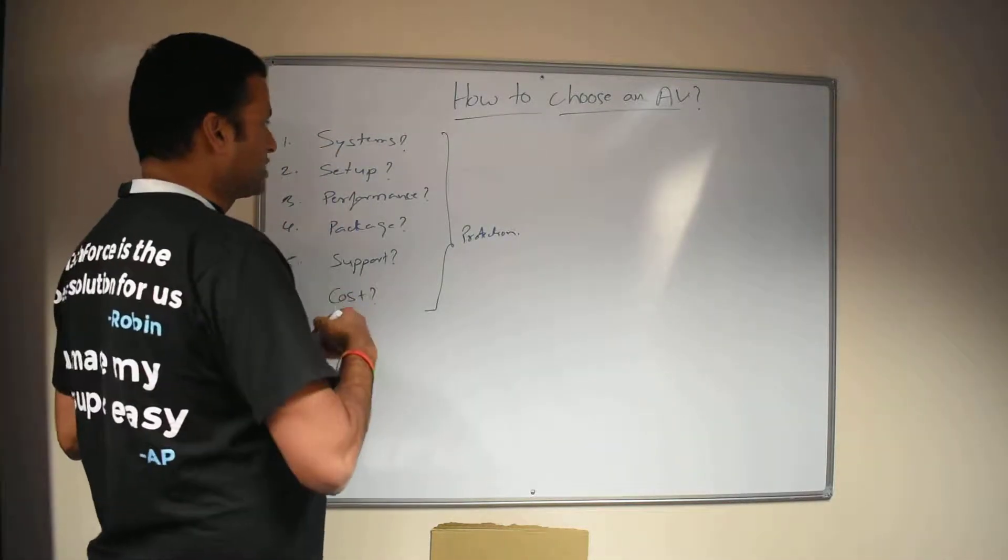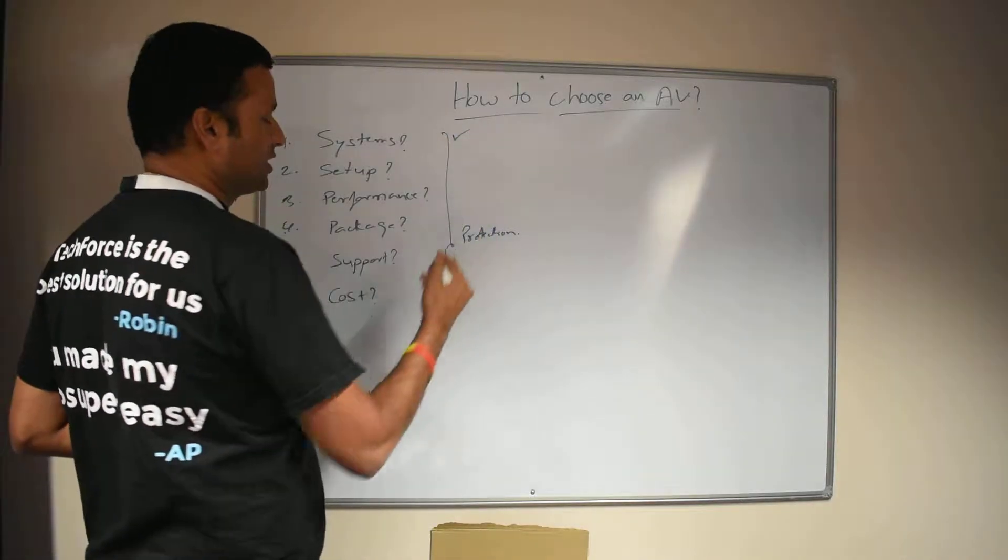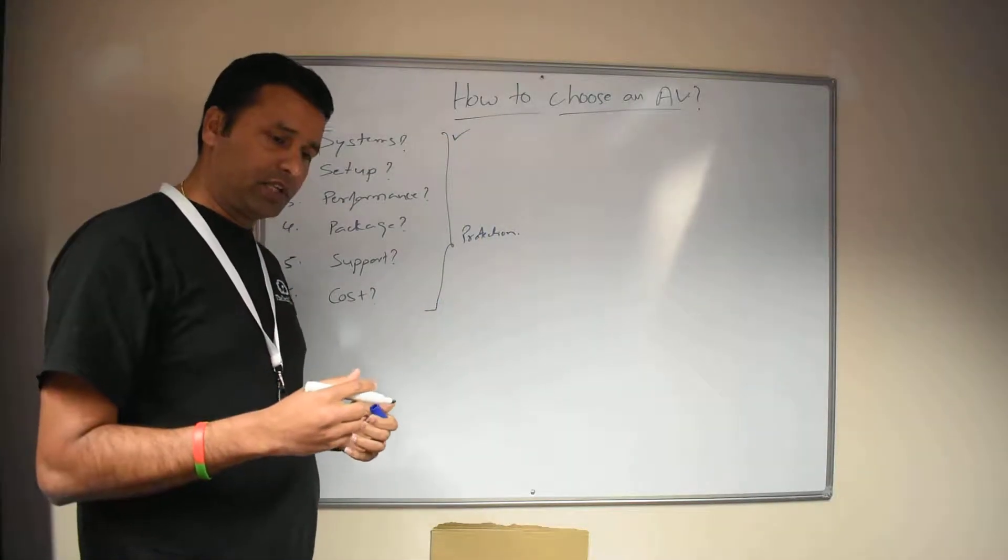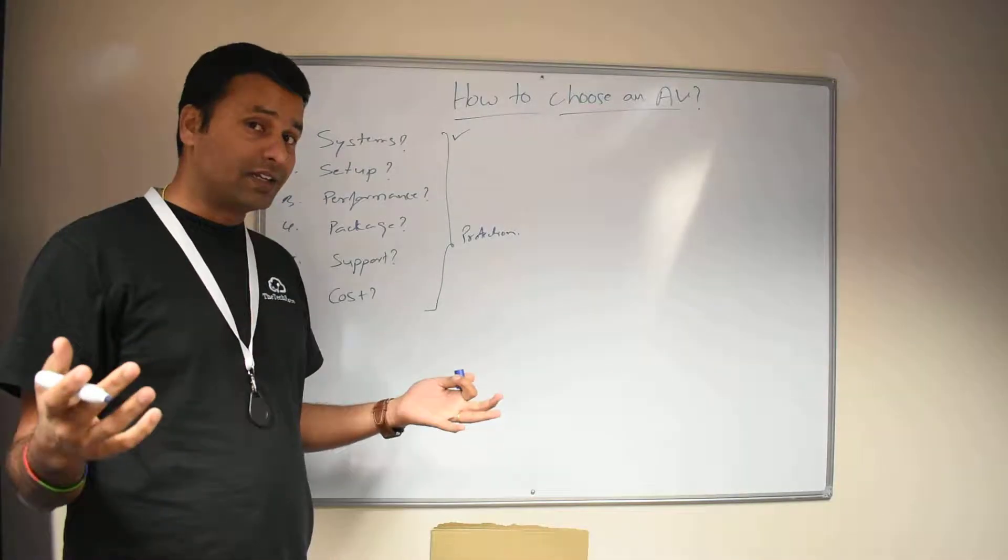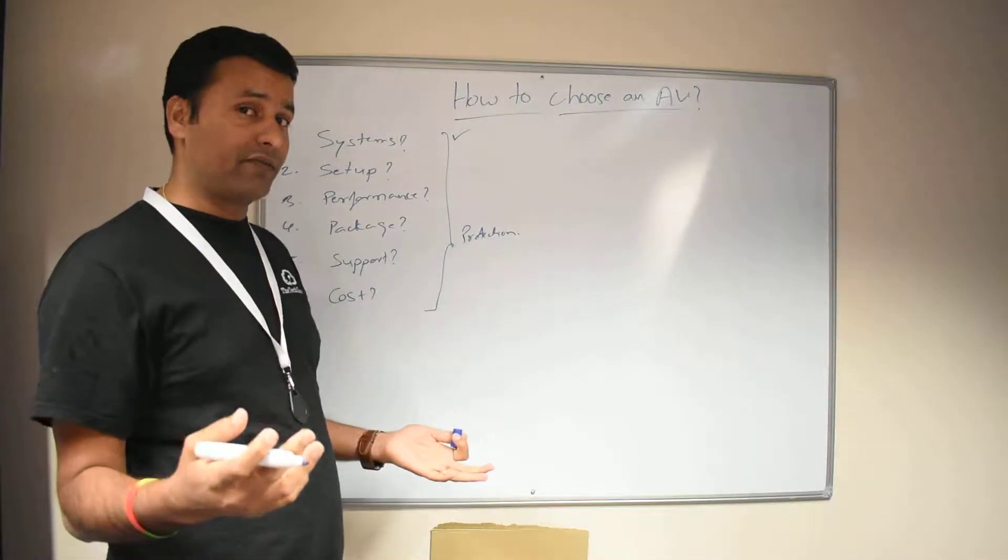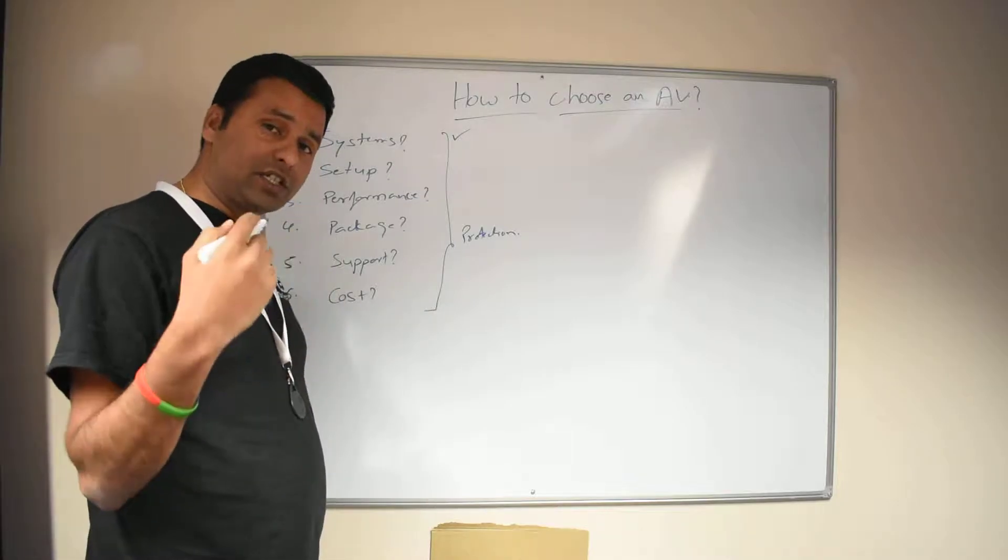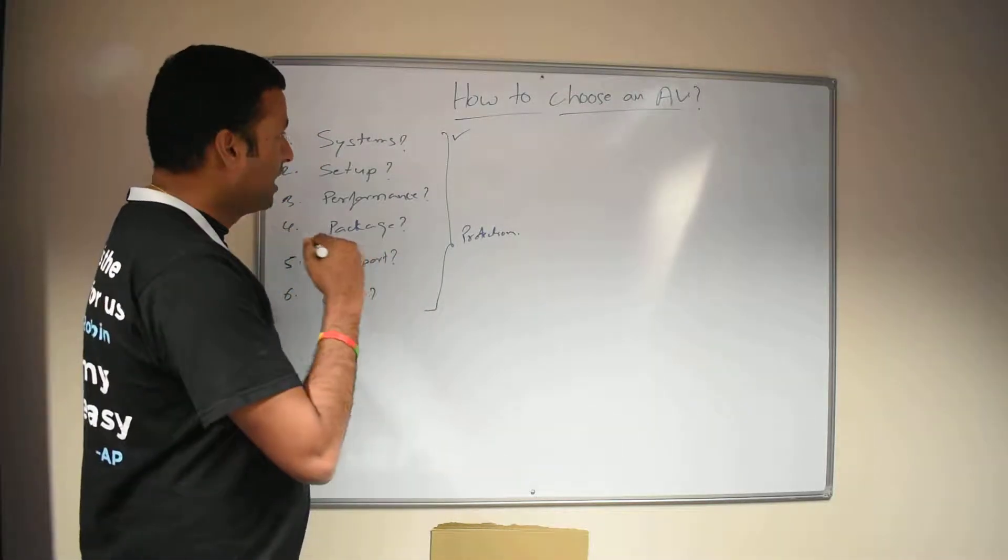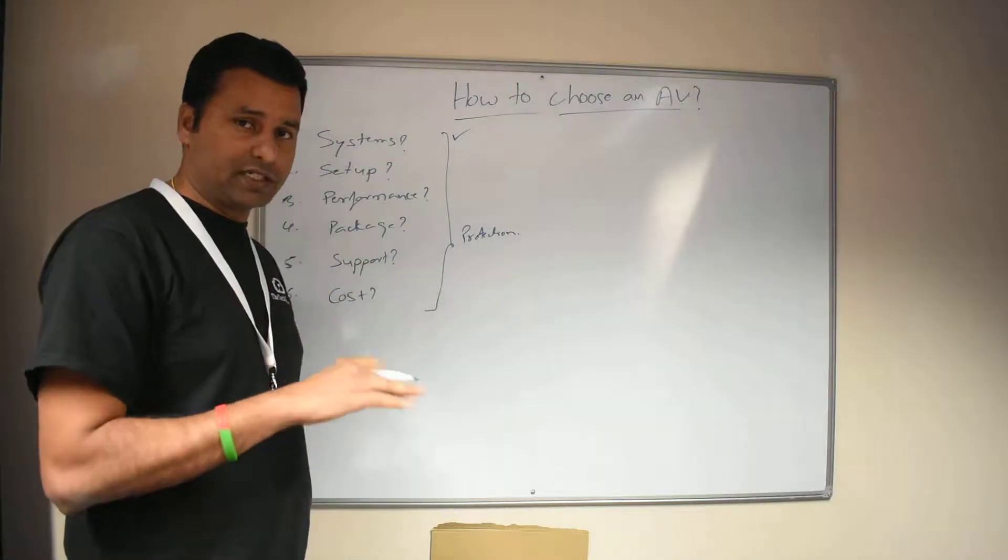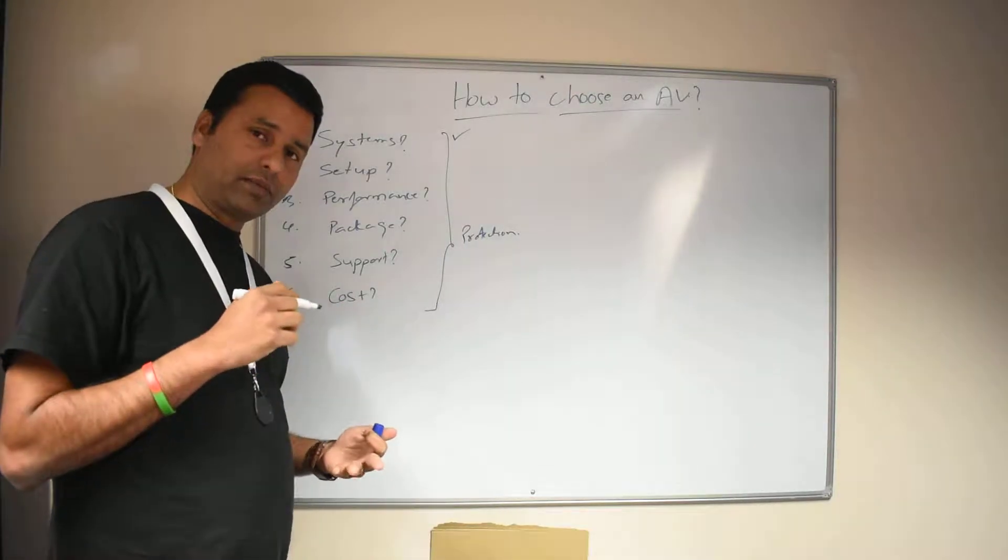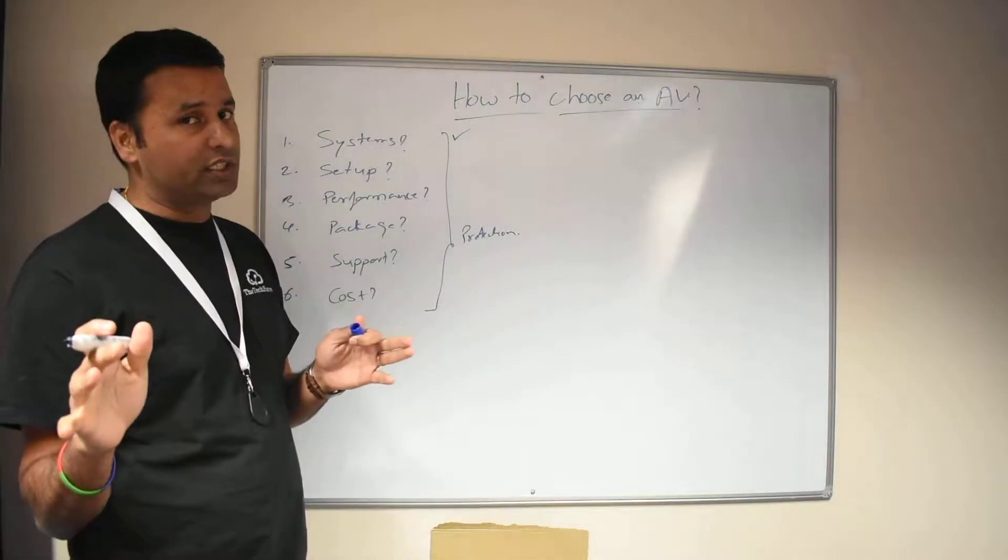The first one being your systems. So what kind of systems do you have? Do you have Windows, Mac, Linux? Most businesses have Windows. You need to check with the vendor, do they support these environments? Every antivirus supports Windows, that's a given. So do they support Mac and Linux? That's the one you need to double check.